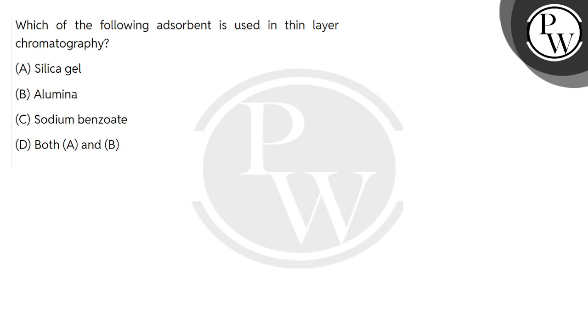Hello students, let's do this question. The question says: which of the following adsorbents is used in thin layer chromatography? The four options are silica gel, alumina, sodium benzoate, or both A and B.